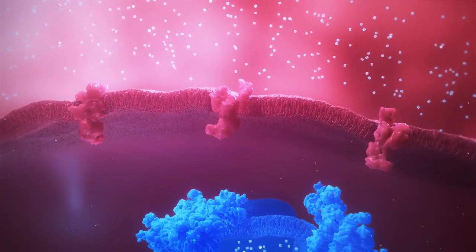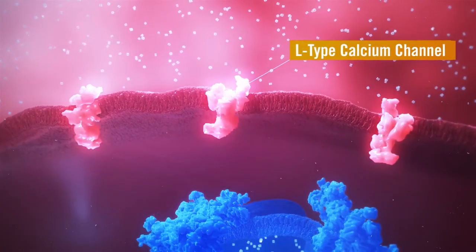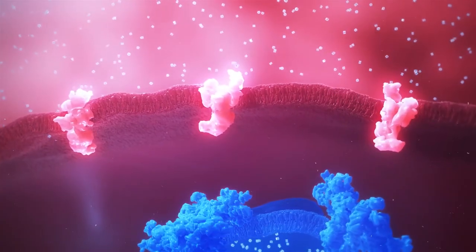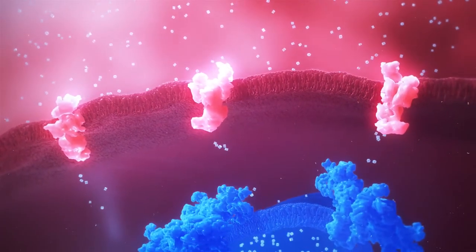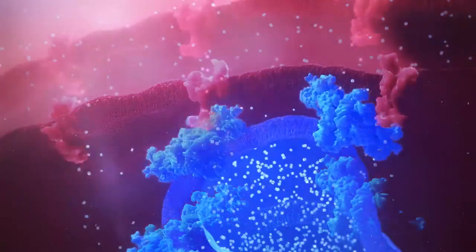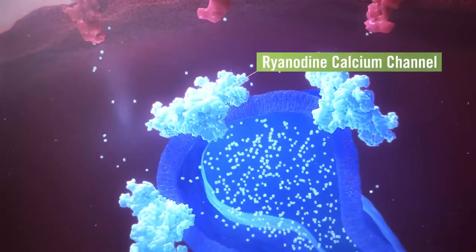This causes entry of small amounts of trigger calcium into the cell. Shortly thereafter, the ryanodine receptor calcium channels located on the membrane of the sarcoplasmic reticulum open.